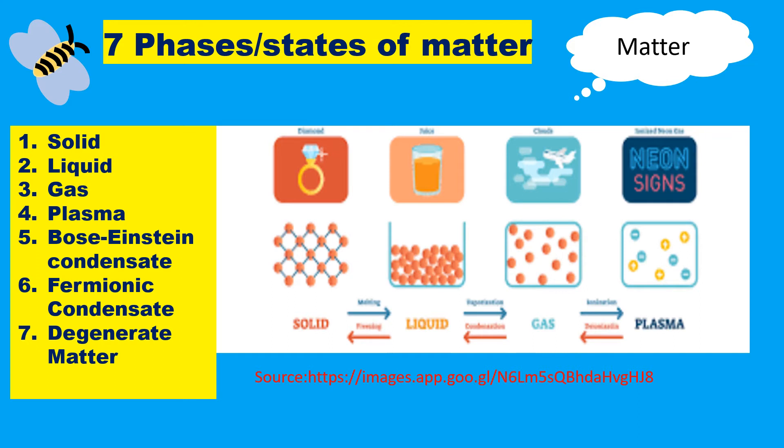The fifth state of matter is the Bose-Einstein condensate. In a Bose-Einstein condensate, the particles of matter stop behaving as individuals and may be described with a single wave function. The sixth state of matter is the fermionic condensate. Seven is the degenerate matter.